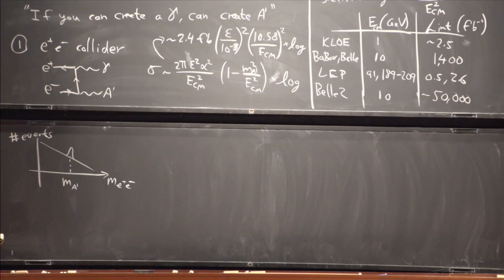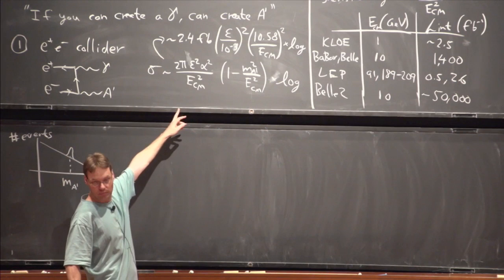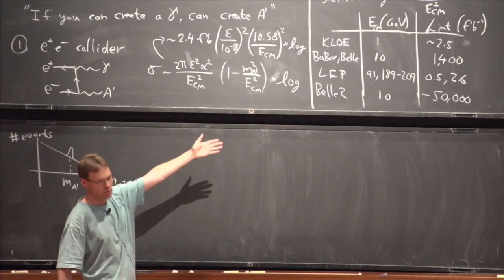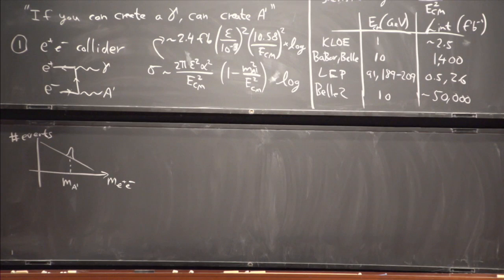LEP has a center-of-mass energy of about 100 GeV. You're down by two orders of magnitude in cross-section compared to BaBar just from the energy factor, and that luminosity was also small. ILC or FCC-ee will have larger luminosities, but because of the cross-section scaling, you want to use Belle II. Unless the dark photon is above 10 GeV — then you can't produce it there and have to look elsewhere.